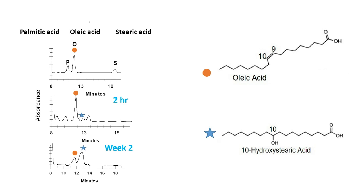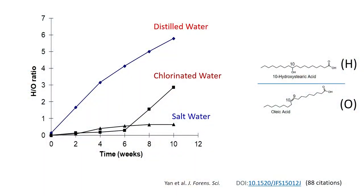We noticed that the peak height of oleic acid decreases while something else appears. There seems to be a correlation between those two things. We completed our study with three different types of water samples. There is a very nice trend. Looking at the ratio — the intensity of 10-hydroxystearic acid divided by the amount of oleic acid — this number did increase over time in DI water.